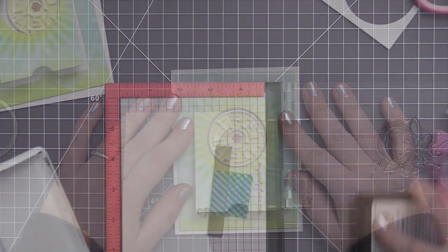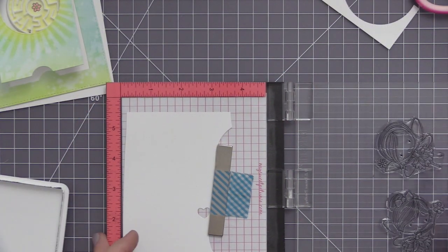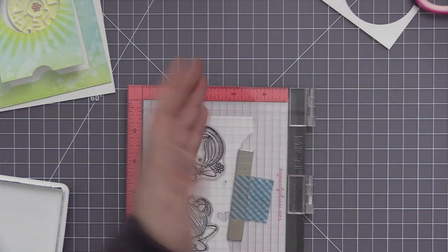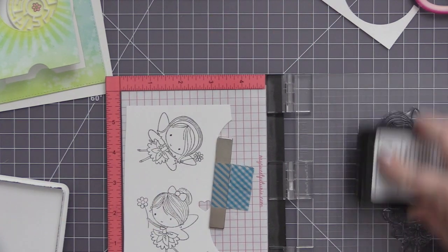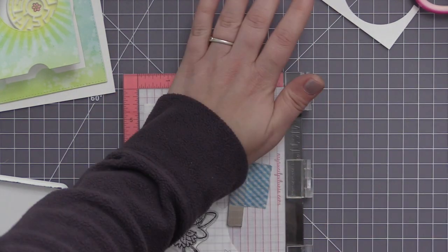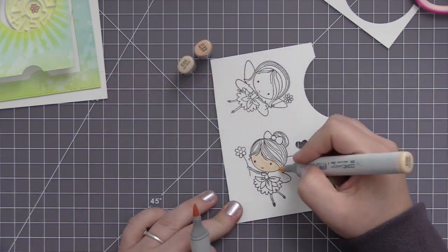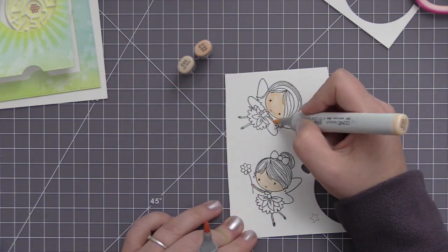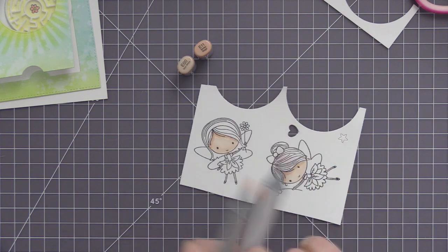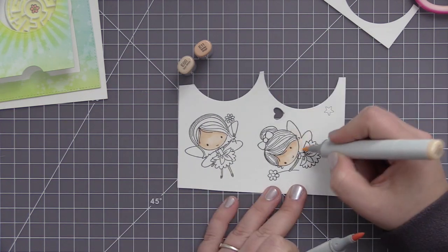Before I do start to adhere everything though, I do need to finish my stamping. I want to get these fairies stamped and colored and get them ready to add to the card. So I have both of the fairies from the Fairy Happy stamp set and I've stamped them both onto a piece of white cardstock with black licorice hybrid ink, and now I'm taking my Copic markers and adding color to these two images.